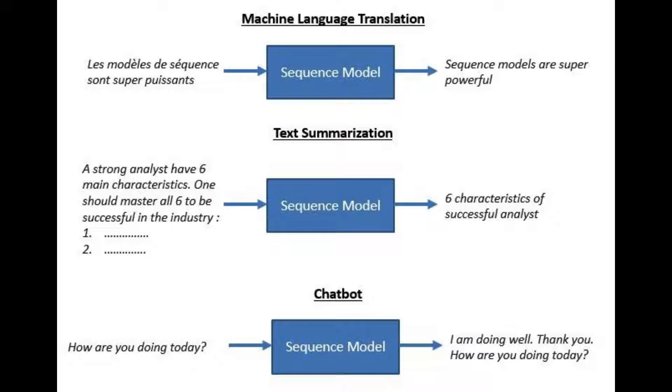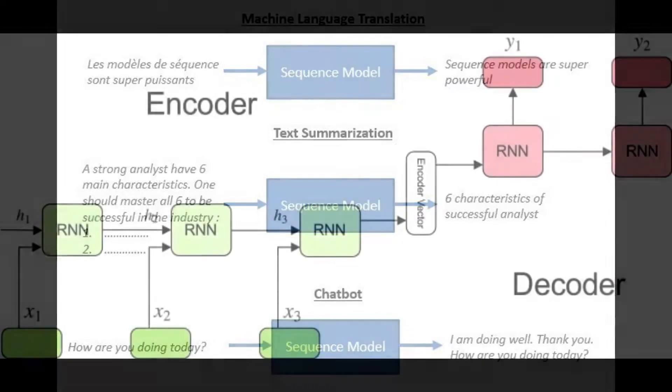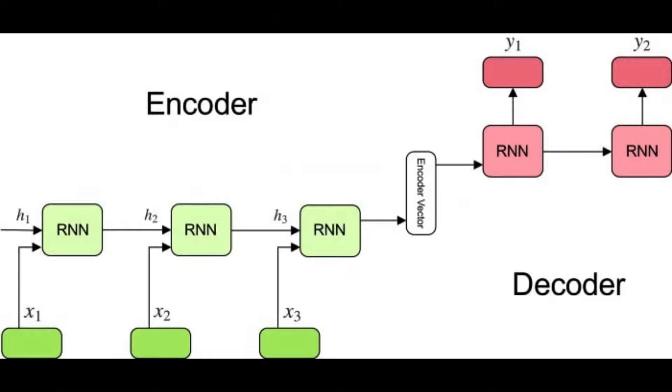The encoder is a stack of many recurrent units—LSTM or GRU cells for good performance. Each accepts a single element of the input sequence, gathers information for that element, and spreads it forward. In the question-answering problem, an input sequence is a group of all words from the question. Every word is denoted as X_i where i is the order of that word. The hidden states H_i are calculated using a formula.